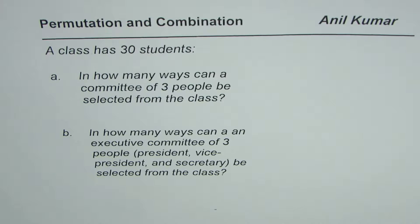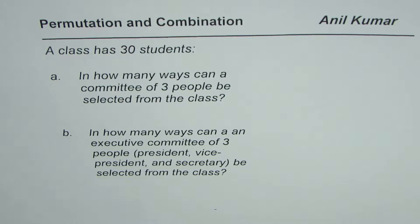Part B is: in how many ways can an executive committee of three people — president, vice president, and secretary — be selected from the class?